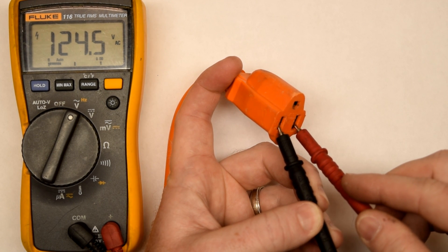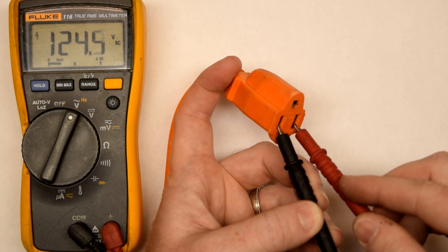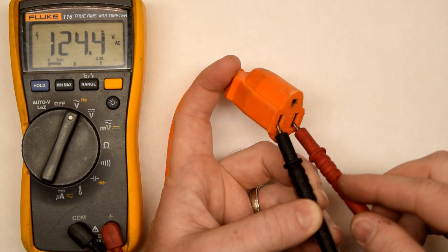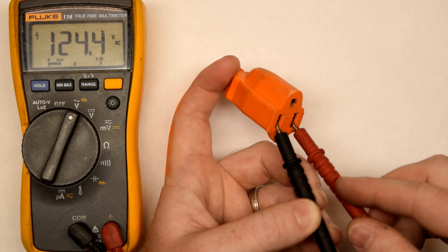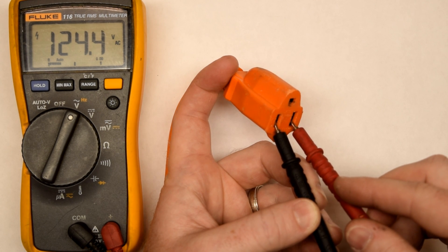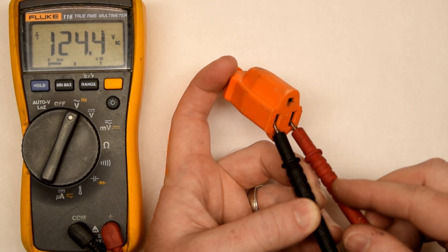And roughly 124 volts. So that's good. Wall outlet should have around 120 unless you're testing a dryer outlet, which should be roughly 220, between 220 and 240 volts AC.